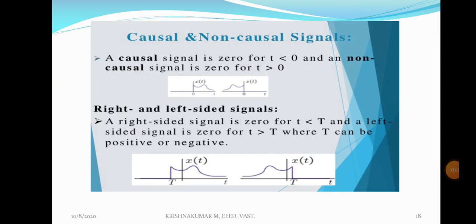Next class on signals and systems. We classified signals according to energy signal and power signal, causal signal and non-causal signal, periodic and aperiodic signal, continuous time signal and discrete time signal, and so on. We discussed all those signals one by one.